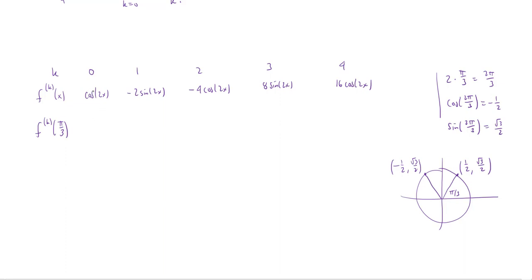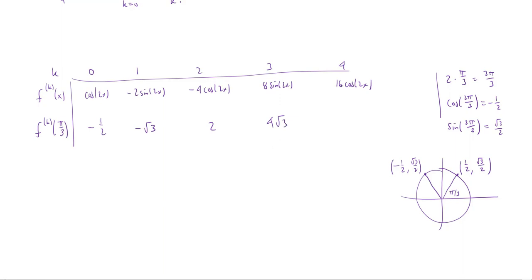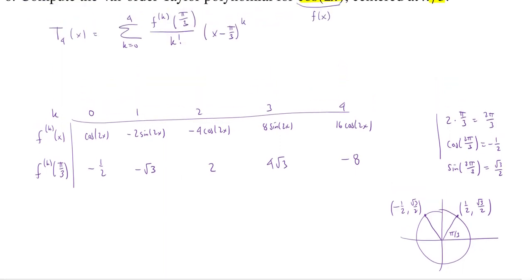Using those values to evaluate the k-th derivatives: cosine of 2pi over 3 gives negative 1/2. Negative 2 times the sine gives negative root 3. Negative 4 times the cosine gives positive 2. Eight times the sine gives 4 root 3. And 16 times the cosine gives negative 8. Now we have all the data.